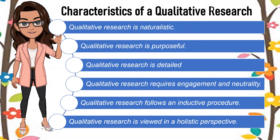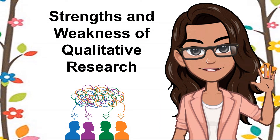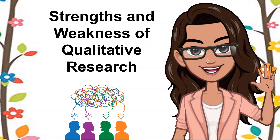Sixth, qualitative research is viewed in a holistic perspective. A study in a qualitative type cannot be simply done in a linear and cause-and-effect relationship approach. Rather, it requires the researcher to view the whole phenomenon under investigation in a complex system. That is, different variables can either cause or effect the phenomenon. It is known that a qualitative type of research focuses more on explaining why subjects under investigation think and behave in certain ways. As cited from University of Denmark Library 2020, this type of research has its strengths and weaknesses presented as follows.